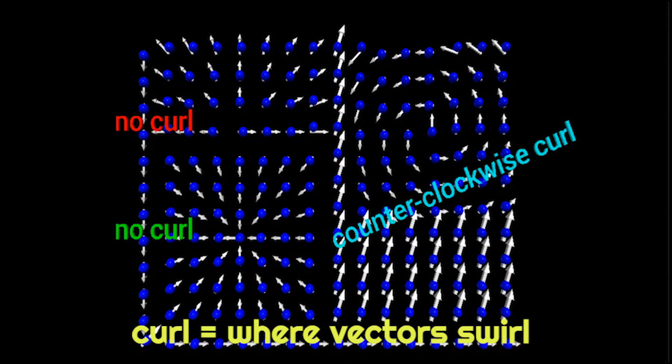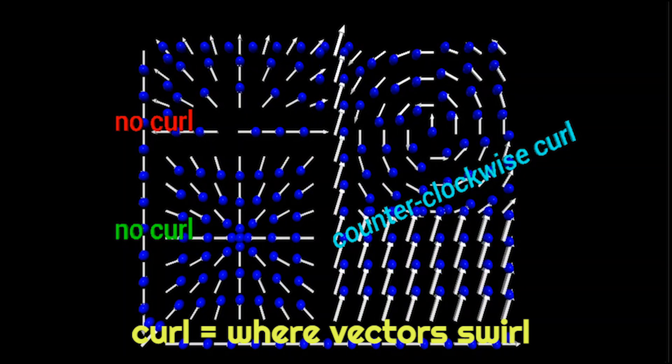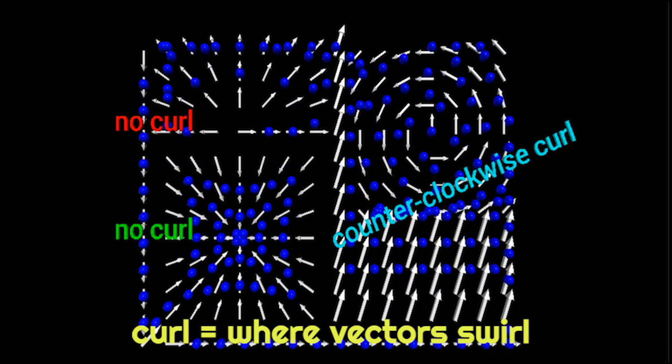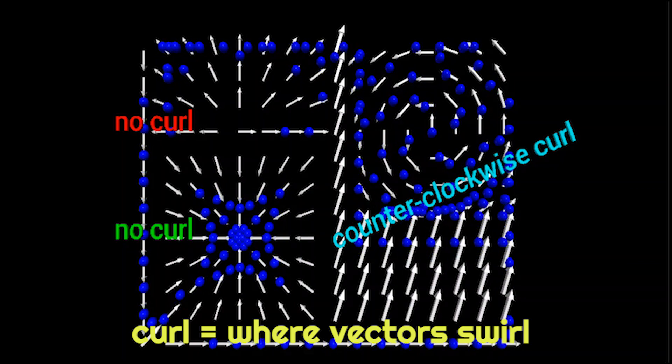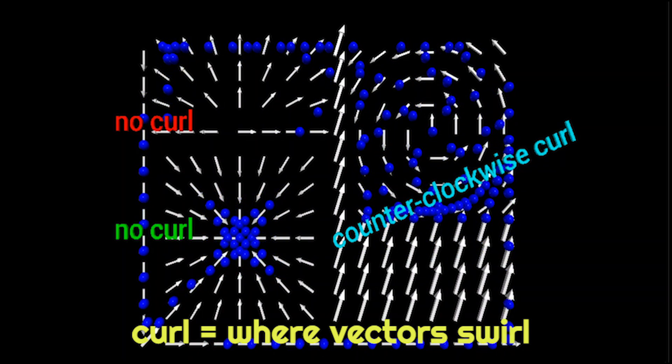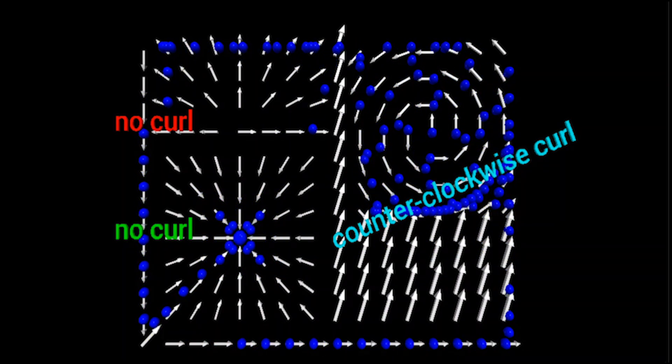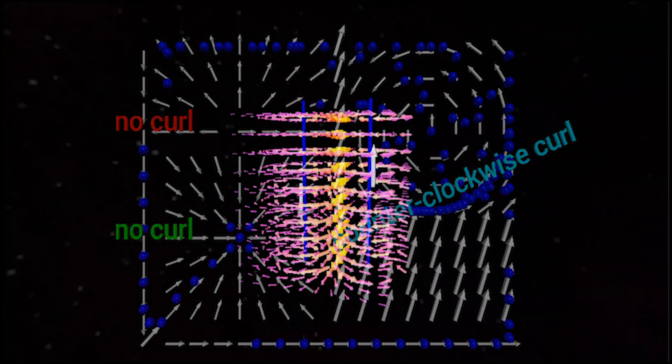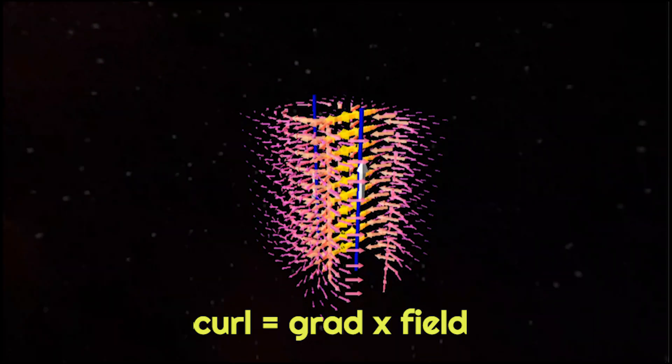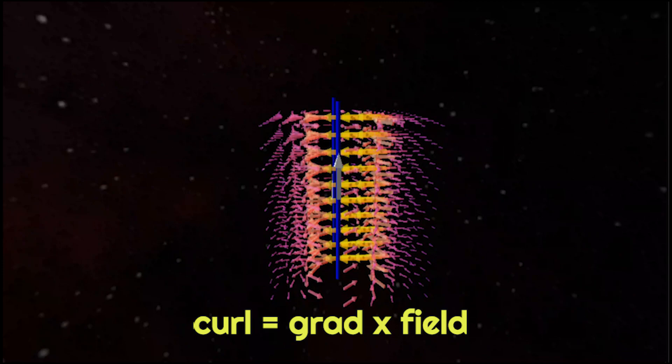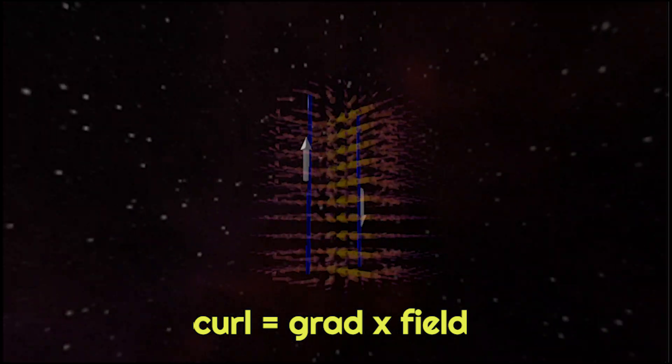We also need to study the curl of a vector field which is a type of derivative that tells us where the vectors are swirling. In our water flow example the curl would tell you where the water is forming whirlpools. For the pair of wires the curl tells you where the currents are located. Curl is calculated as the cross product between the gradient and the vector field.